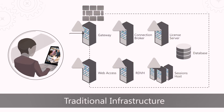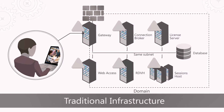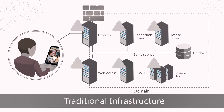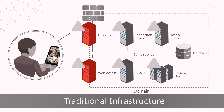Now let me tell you about how the modern infrastructure changes things. If we take a look at a traditional RDS infrastructure, each server role would be joined to the domain. These components would need to be on the same network as your application and desktop hosts, your session hosts and VDI instances. Because your RD Web and RD Gateway roles are both domain joined and public facing, they are vulnerable to attack.